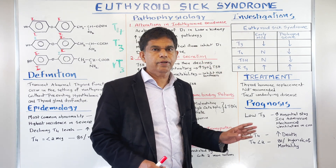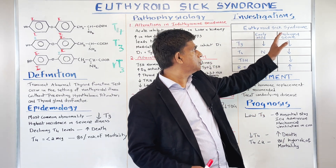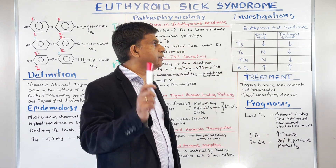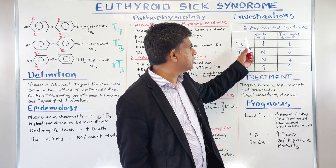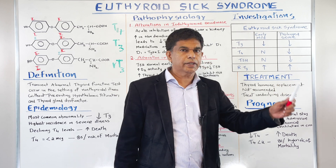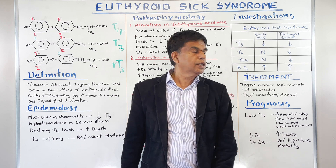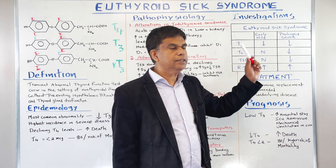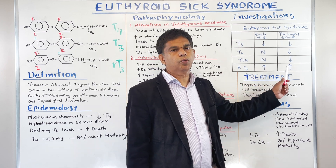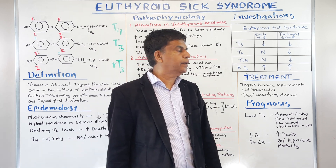Now let's look at investigations. In Euthyroid Sick Syndrome — early and mild versus prolonged and severe — T3 will be decreased in both stages. T4 in the early stage is going to be normal, but later it gets decreased. TSH is normal in the early stage but decreases later. And reverse T3 is increased in both early and severe prolonged situations.